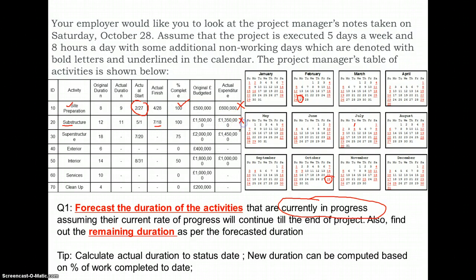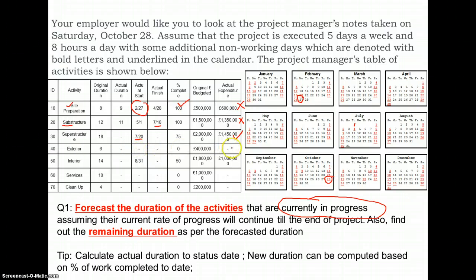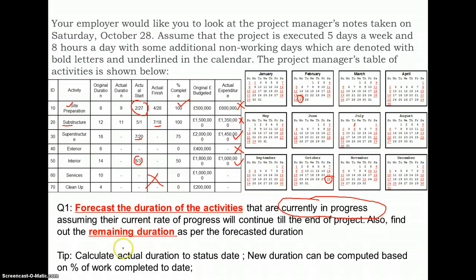The superstructure activity started on 27th of July and is not yet complete, so this is an activity for which we would like to report progress. Exterior works has not yet started — it will start at some point in the future, so we are not going to report for this activity. Interior works started on 31st of August and is still in progress, so we will be reporting it. The other two activities have not yet started.